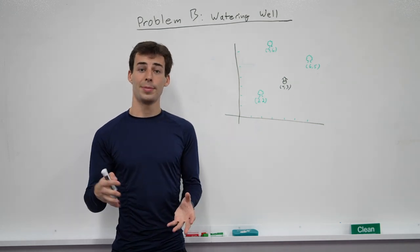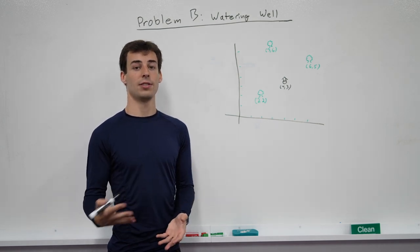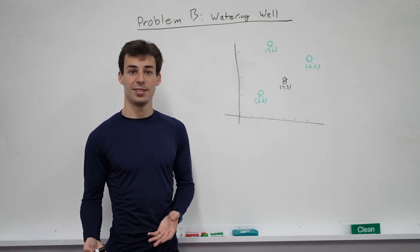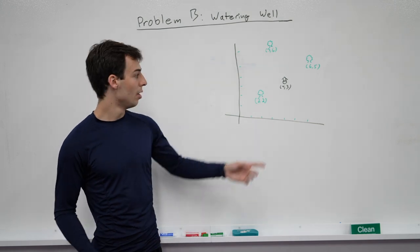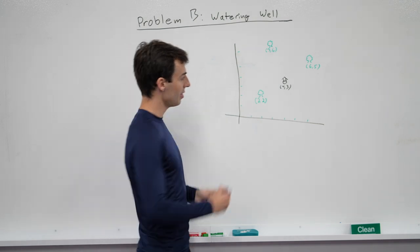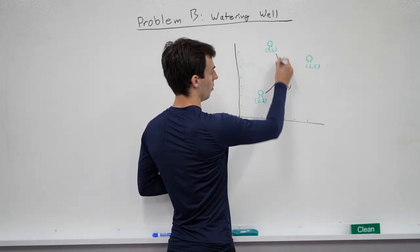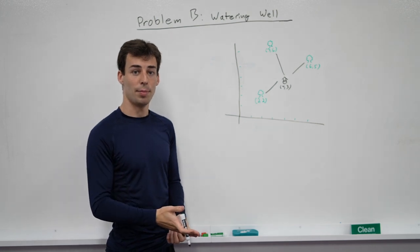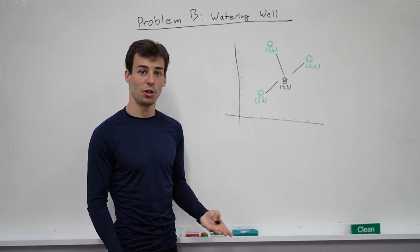He wants his watering well to be close to all of the trees, and the cost of a watering well is the squared sum of distances to all of the trees. So in this case, we have a watering well at 4, 3. We want the distance to each of these. We'll square them, and then we'll add them up, and that'll be the cost for this watering well.